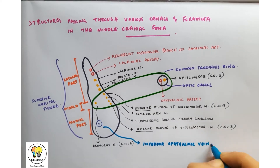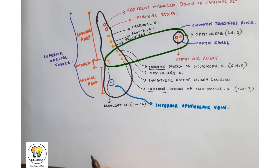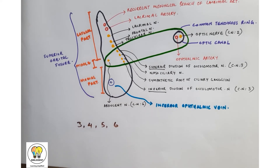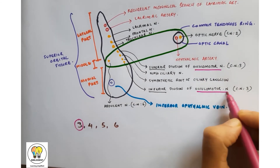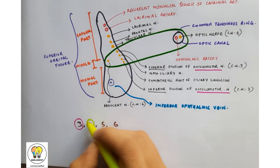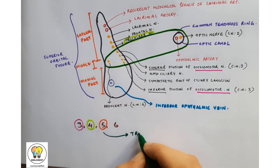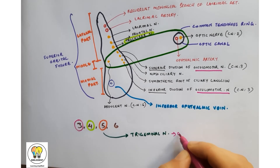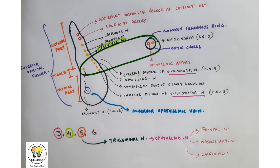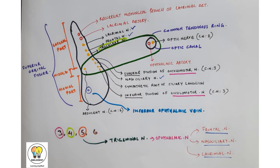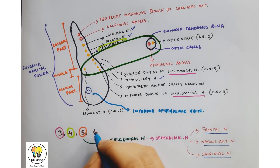In the medial part there is only one vein: the inferior ophthalmic vein. In total there are four cranial nerves here: the third, fourth, fifth, and sixth. The third cranial nerve is the oculomotor nerve, with superior and inferior divisions. The fourth is the trochlear nerve. The fifth cranial nerve is the trigeminal nerve — its ophthalmic branch divides into frontal nerve, nasociliary nerve, and lacrimal nerve. The sixth cranial nerve is the abducens nerve.